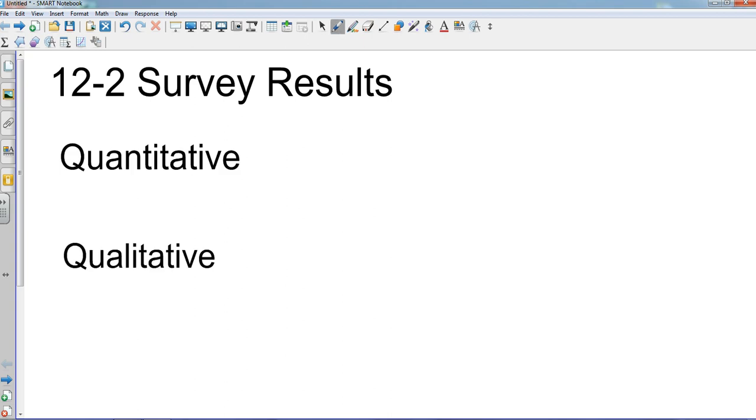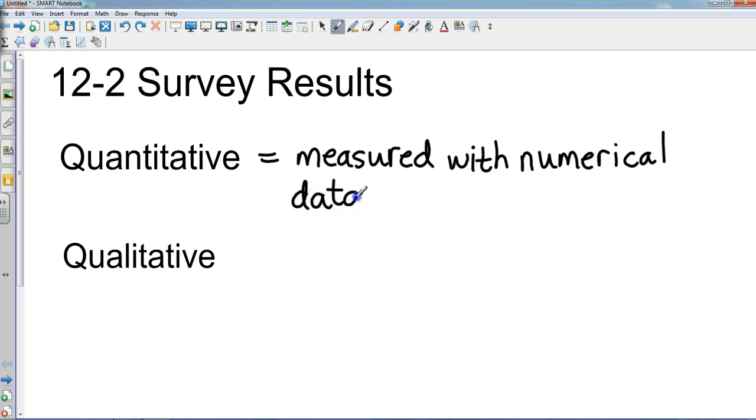We've got quantitative and qualitative data - two different types of things that we can put into our survey. Quantitative is data that can be measured, and it can be measured with numerical data.